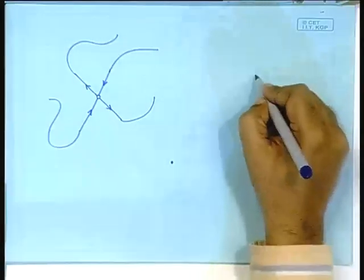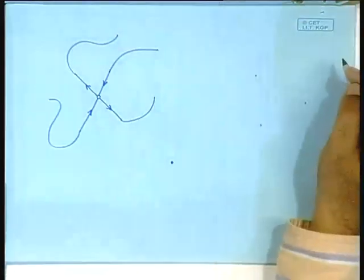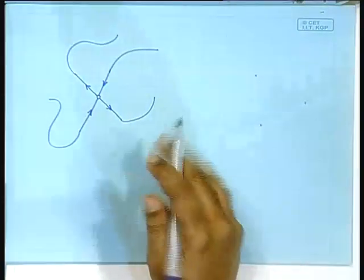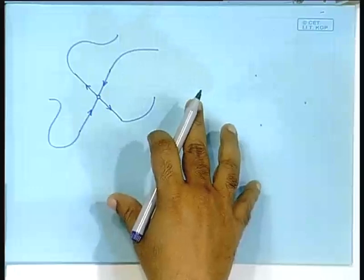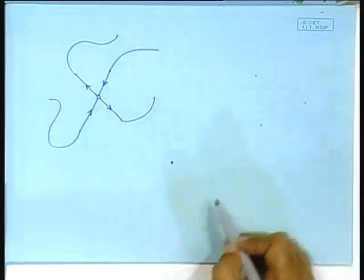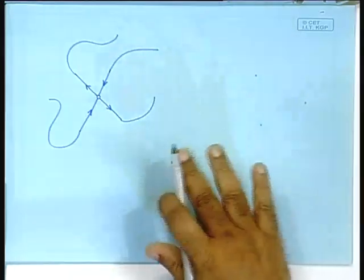For example, it is possible that here is one fixed point attractor and here is another period-3 attractor. Both are stable, which means that both will have their own basin of attraction. That means there will be a collection of initial conditions attracted to this one, and another collection attracted to that one, and they would be divided by a basin boundary.